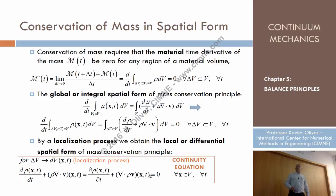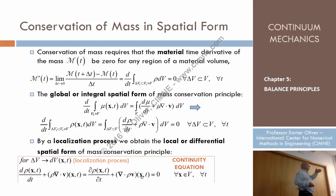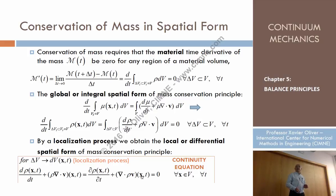The continuity equation is essentially given in a spatial form — the arguments of the density and the velocity are the spatial coordinates and time. What about expressing the same equation using a material description? So we use the material label, the particle label, the material coordinates capital X, as a way of describing the motion.